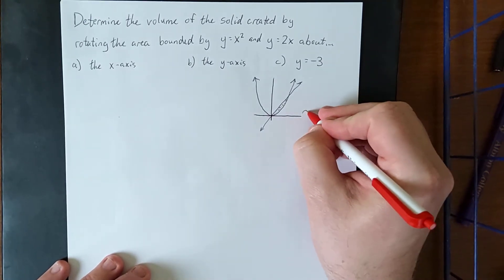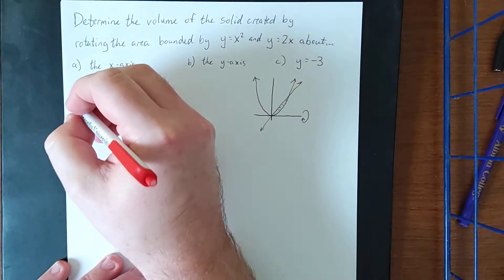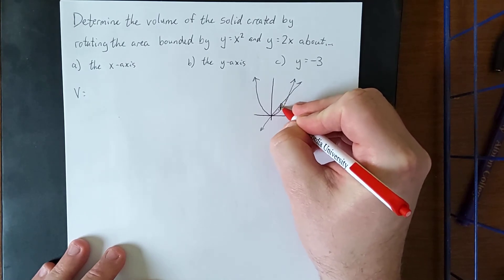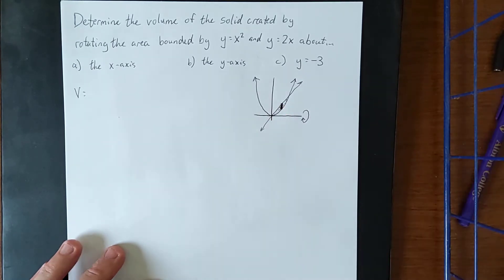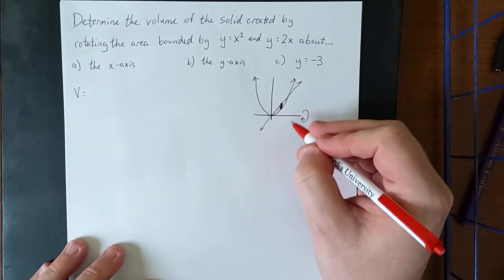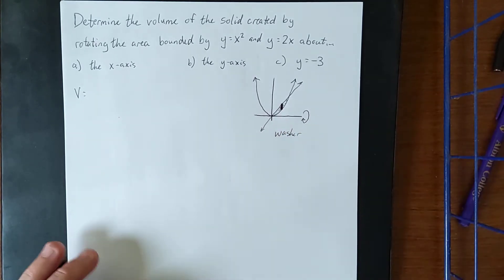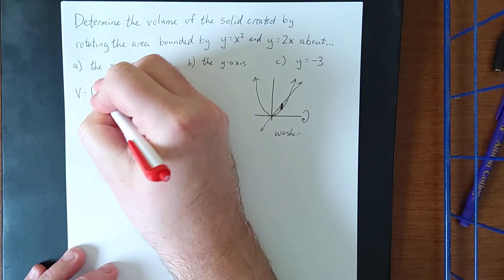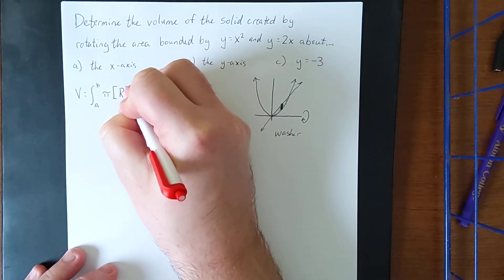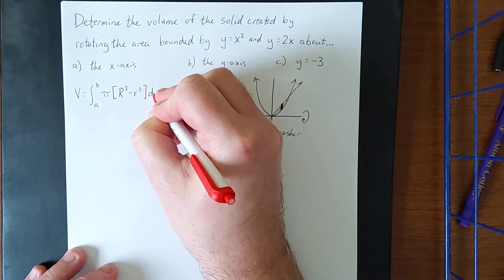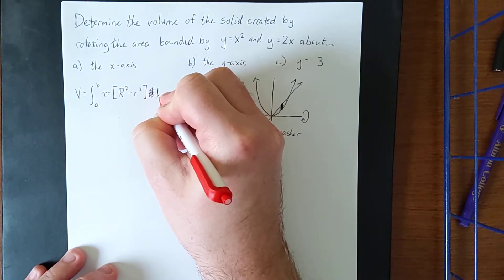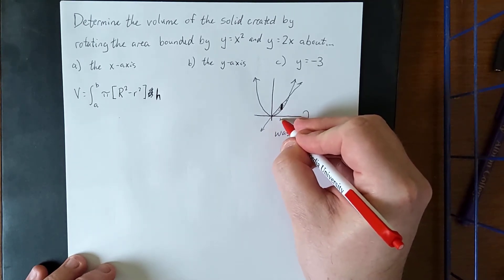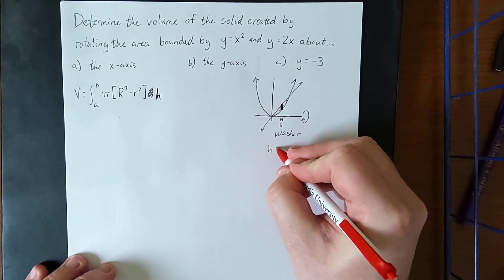For part a, rotating about the x-axis, we first need the volume formula. Drawing a sample rectangle within the region, we notice that the rectangle does not touch the axis of rotation. As such, when we rotate it, it creates a washer rather than a disk. The height of the washer is a little tiny change in x, expressed as dx.